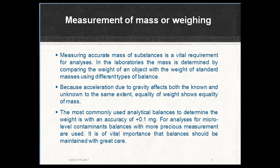Measuring accurate mass of a substance is a vital requirement for analysis. In the laboratory, the mass is determined by comparing the weight of an object with the weight of a standard mass using different types of balance. Because acceleration due to gravity affects both the known and unknown to the same extent, equality of weight shows equality of mass. The most commonly used analytical balance determines weight within an accuracy of 0.1 mg.